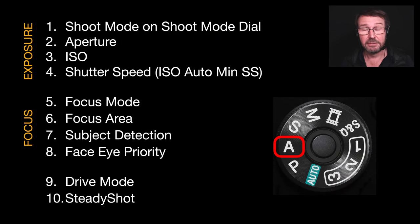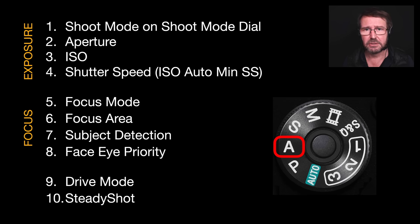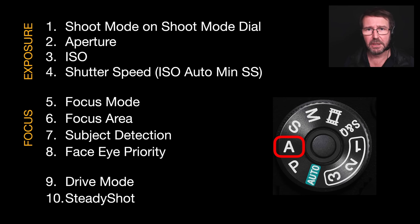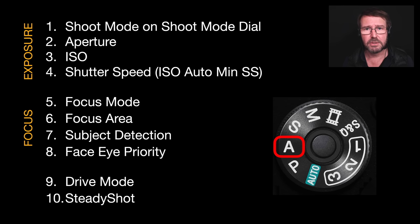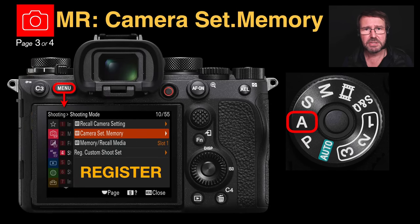Let's take a look at how we can first register a memory to the shoot mode dial. You pretty much want to look at your exposure settings. You'll need to turn the shoot mode dial to aperture priority, shutter priority, or program — whichever is your preferred exposure method. Then you'll look at aperture, ISO, maybe shutter speed. If you're using aperture priority, you might want to look at ISO auto minimum shutter speed. You also want to look at your focus settings, maybe steady shot and drive mode settings. Once you've set up the camera with everything you want to recall quickly in the future, proceed to either page three or four depending on your camera menus, and then register that memory.